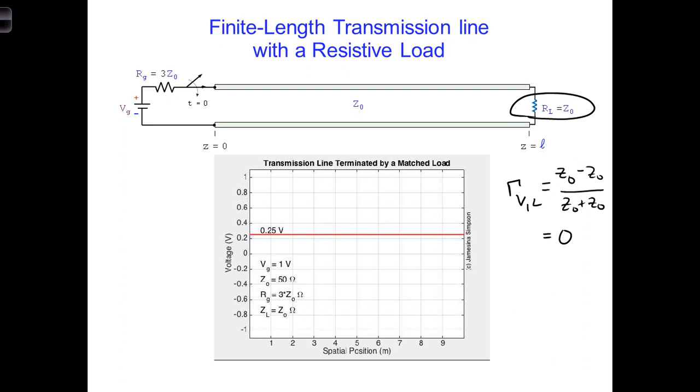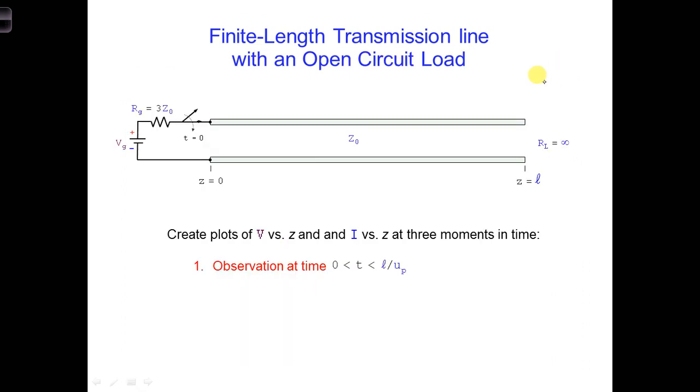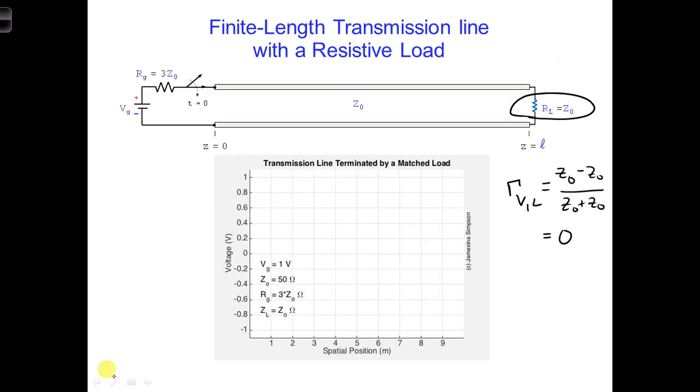So for this scenario, where did the power from the generator go? We know that the power from the generator was delivered to the transmission line, and if the transmission line is lossless, none of the power is lost along the transmission line. The energy is stored in the electric and magnetic fields around the conductors, and at the load there is no reflection. That means all the power must be delivered to the load when RL equals Z₀, the characteristic impedance of the transmission line.